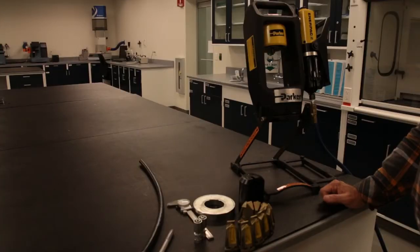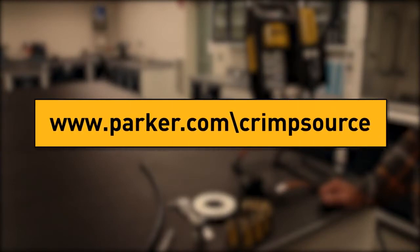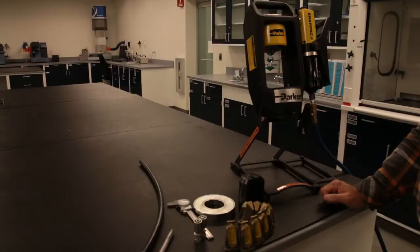As you begin to make assemblies on your Parker Parflex mini crimp machine, please ensure your crimper has the proper crimp die and die ring, both of which are found at www.parker.com/crimpsource, and also make sure your pusher cup is properly installed.